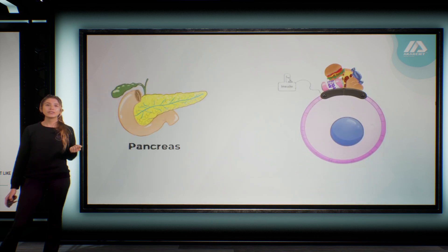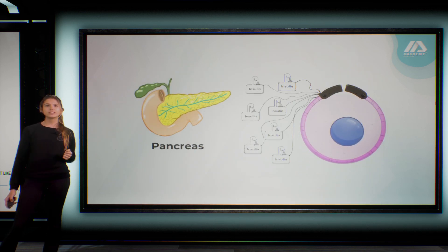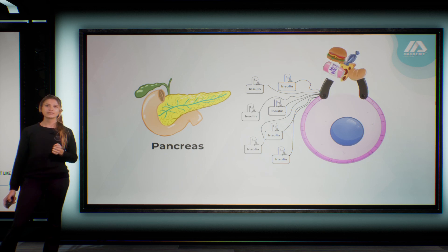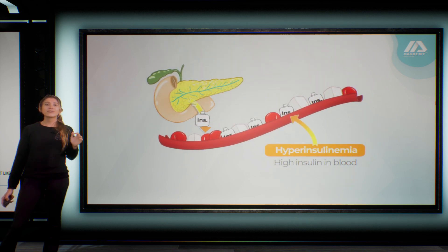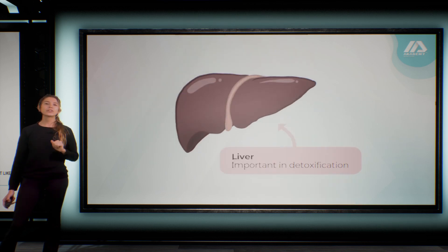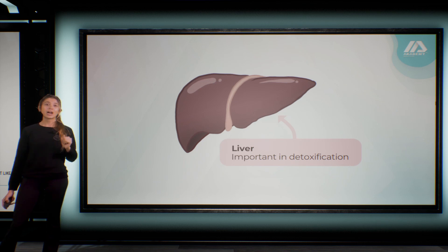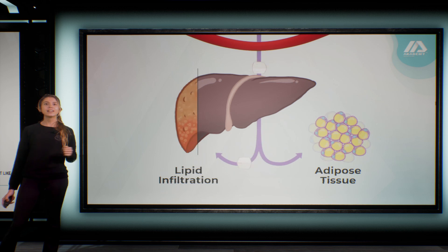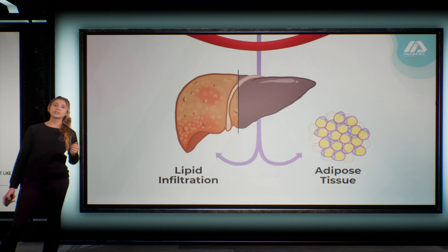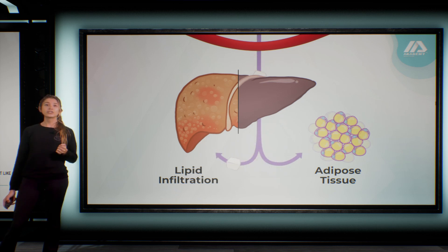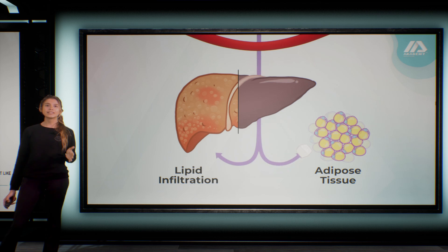In this situation, the pancreas is forced to produce more insulin to try to overcome all this cell resistance. The state of hyperinsulinemia — that is, high levels of insulin in the blood — induces a radical change in the metabolism of the liver. The liver is a key organ in detoxifying the body. However, under hyperinsulinemia, it leaves that function behind and takes on the role of converting excess blood sugar into fat instead. The liver is also responsible for storing sugar in fat deposits, the adipose tissue, and even in the liver itself — also known as hepatic lipid infiltration, or fatty liver.